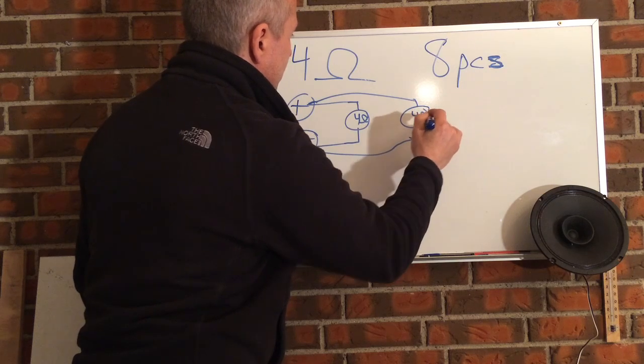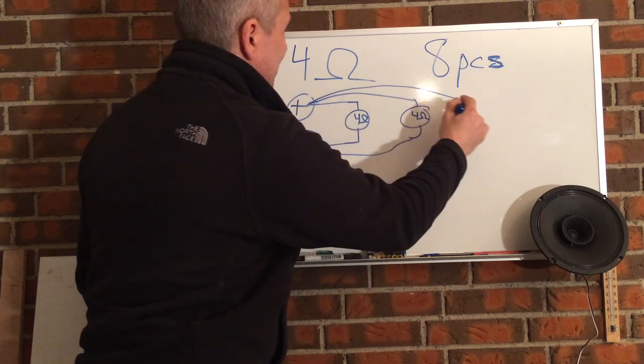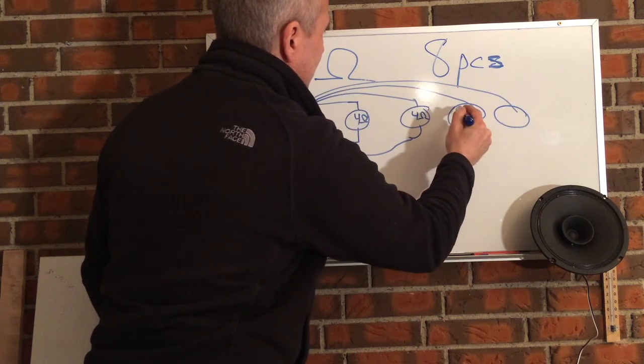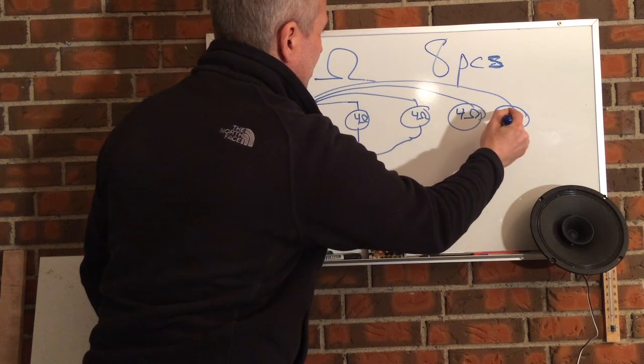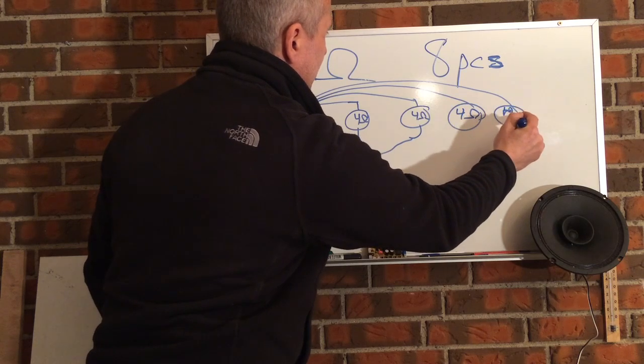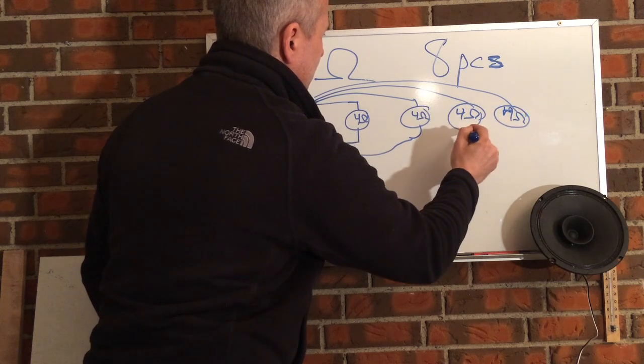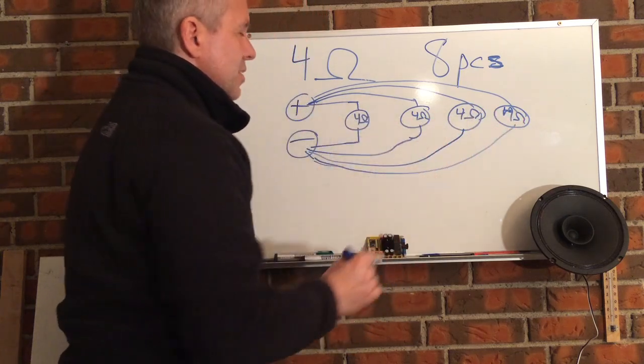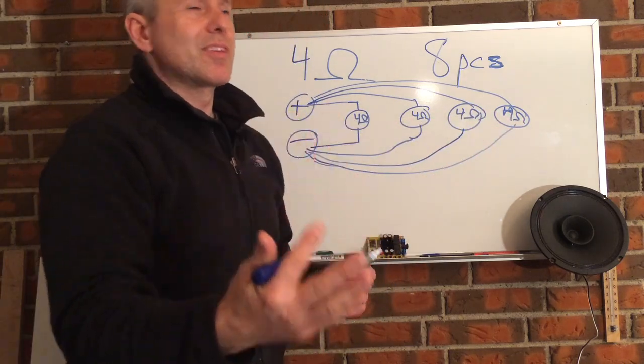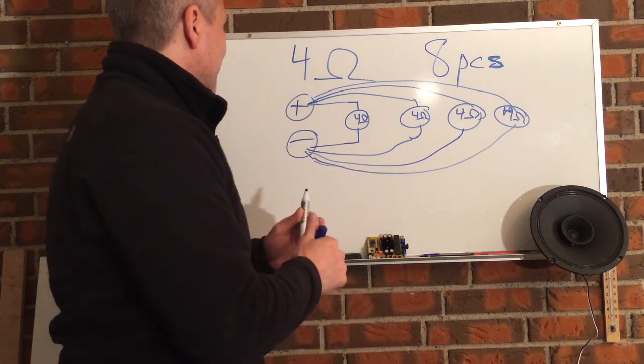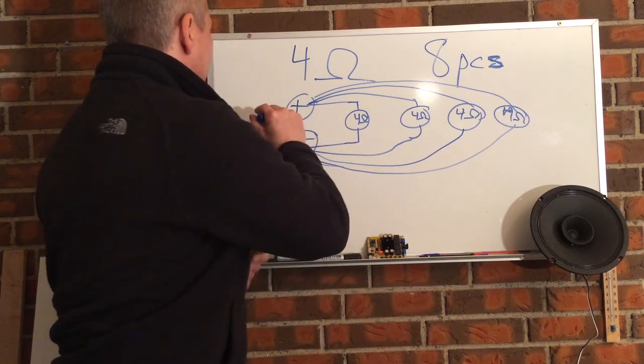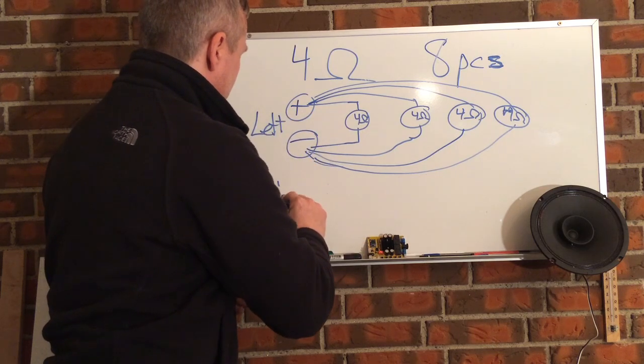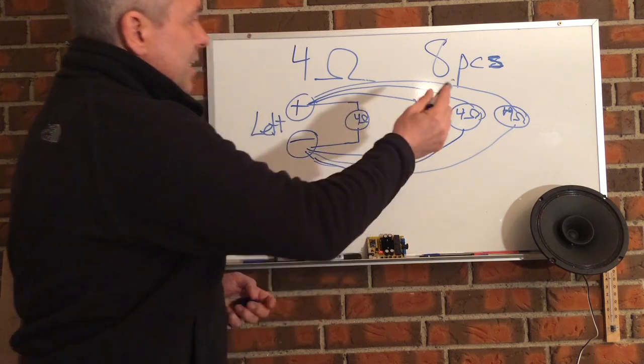Each of these at four ohms and you do another one and four ohms, four ohms. And then you do the other output. Let's say that this is the left channel and then you have the right channel and you do the exact same thing.